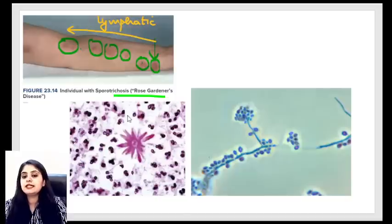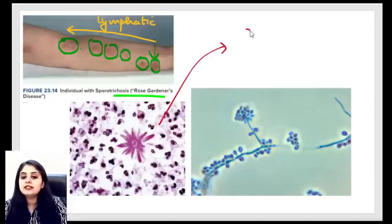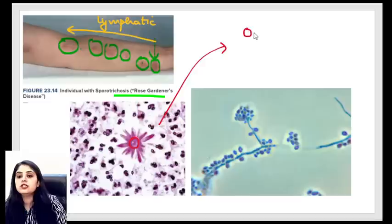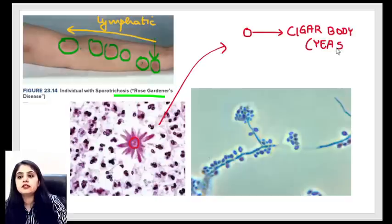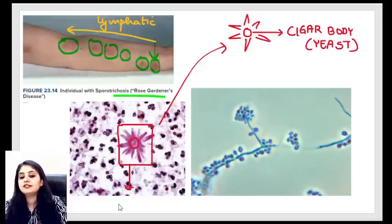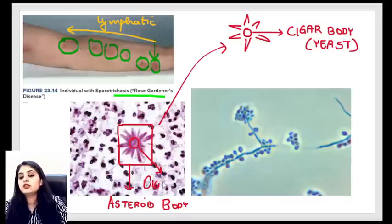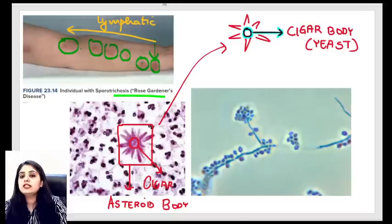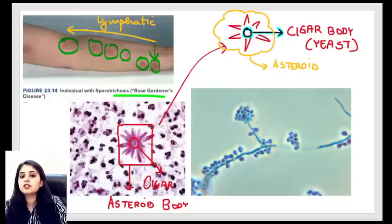Important question: H&E stain of a nodular lesion on the arm of a forest worker shows brown-colored bodies. Don't confuse this with Sporothrix — look at the photo carefully. The answer is Chromoblastomycosis, also called verrucous dermatitis. 'Verrucous' means wart-like, and 'dermatitis' means skin involvement. Forest workers walk barefoot, allowing the organism to enter through the feet, producing a cauliflower-like warty lesion.